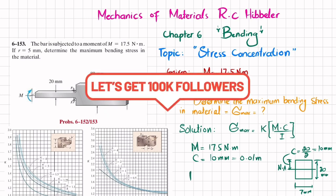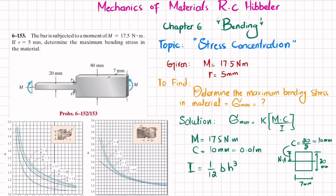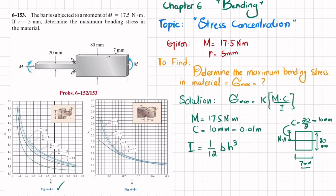I is the second moment of inertia, and for a rectangular section it is (1/12)·b·h³. The breadth is 7 millimeter, which is 0.007 meter, and the height is 20 millimeter, which is 0.02 meter. So I equals (1/12) times 0.007 times (0.02)³.